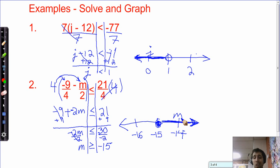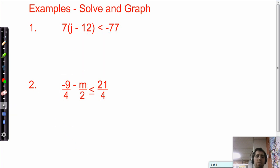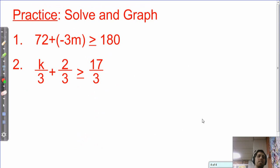Do your best on the practice problems that I leave you with. Use these examples to help you out, and you will do wonderfully. First one, 72 plus negative 3m is greater than or equal to 180. Solve it and graph it. And, number two, k over 3 plus 2 thirds is greater than or equal to 17 thirds. Make sure you distribute. Best of luck. See you later.